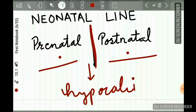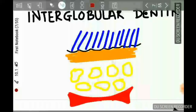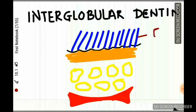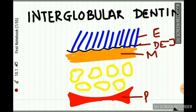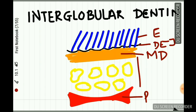Now let's look at interglobular dentine. In the tooth, we have the enamel, the dentino-enamel junction, the pulp, the mantle dentine — covered in part one — and the circumpulpal dentine. Interglobular dentine is found within the circumpulpal dentine.